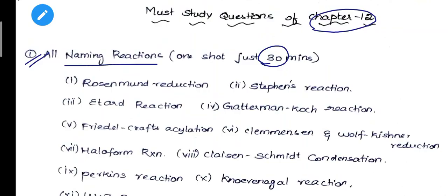I will upload a video in the description. Just spend 30 minutes and you will find the first question — the first naming reaction. I will show you a naming reaction. So naming reaction is very important; that is the first question. Rosenmund reaction, Stephen's reaction, Etard reaction, Gattermann-Koch reaction — there are 11 to 12 questions covered.